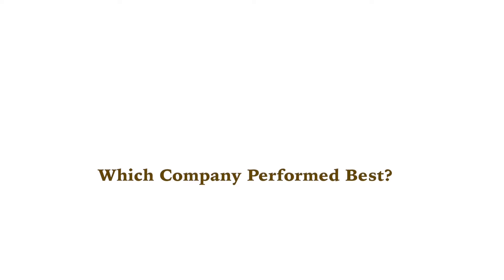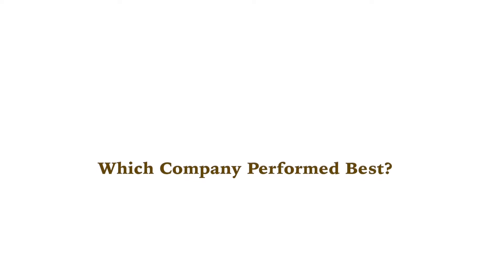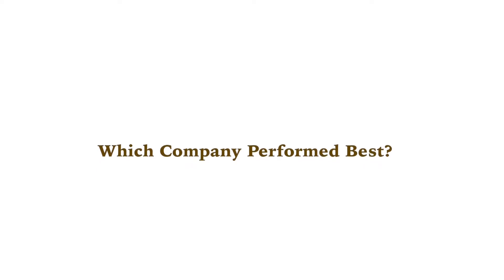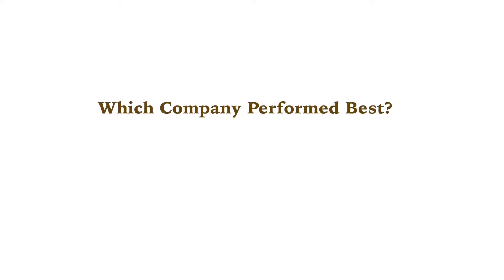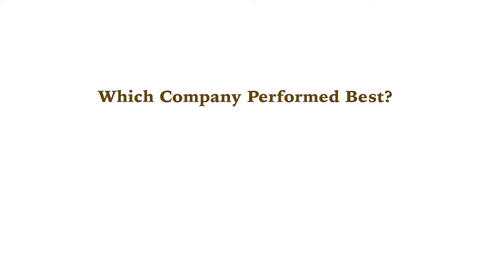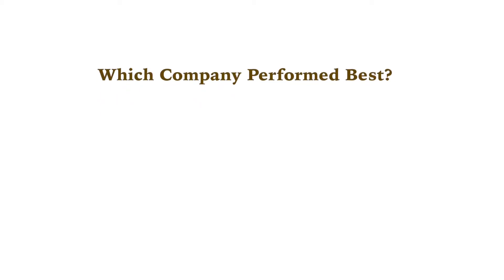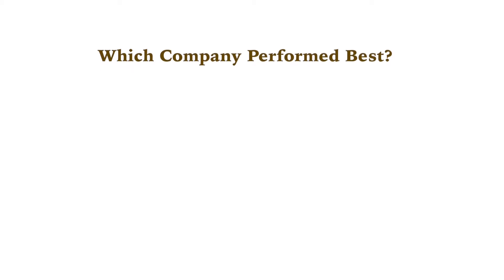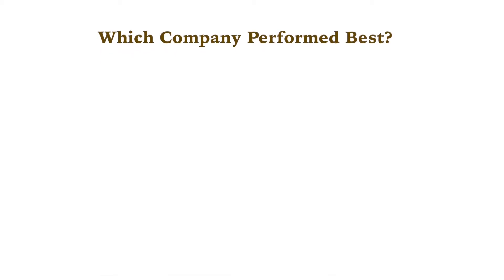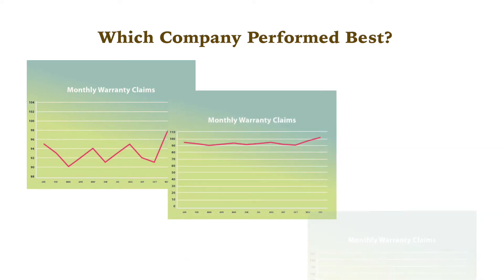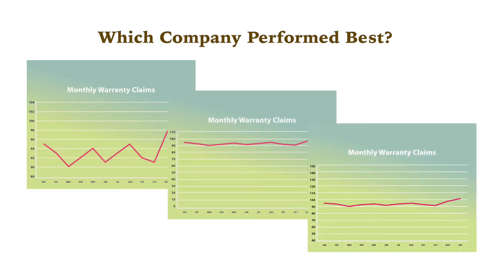Here's a simple example of how the design choices you make have ethical implications. Assume we're measuring a business parameter such as warranty claims. A company would typically have two goals related to warranty claims: to minimize the overall level, and to minimize the variance from month to month. Which of these three companies performed the best over the past year?